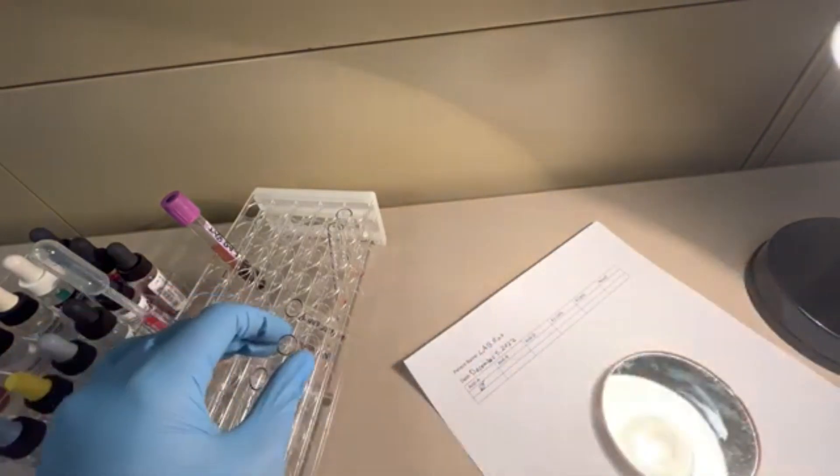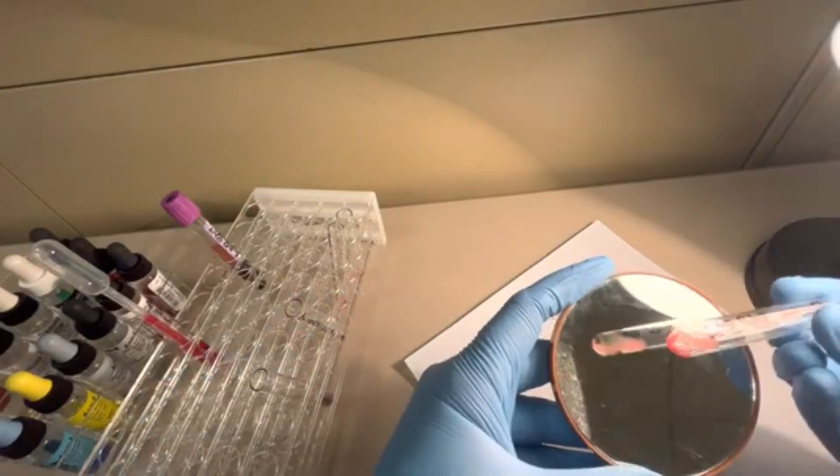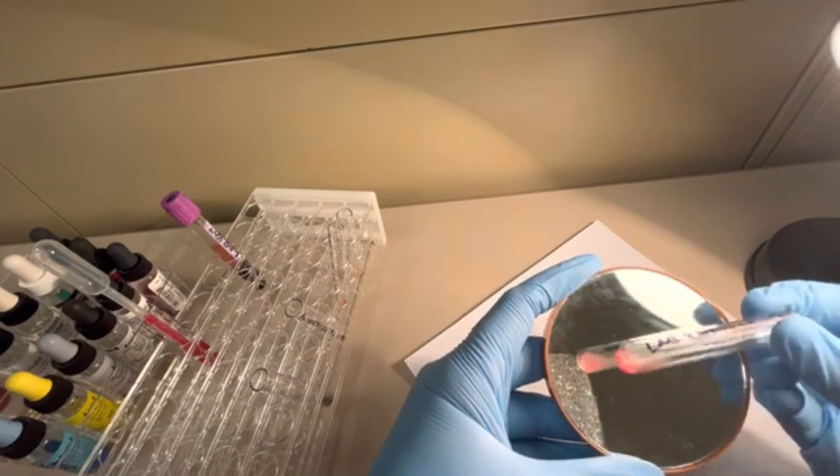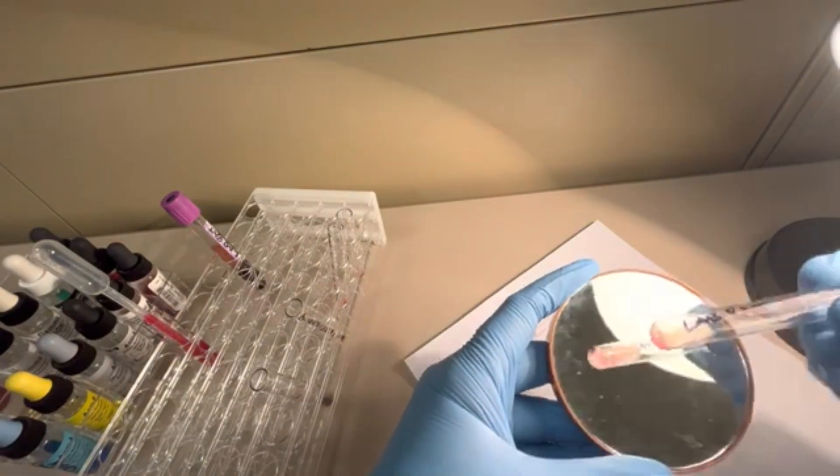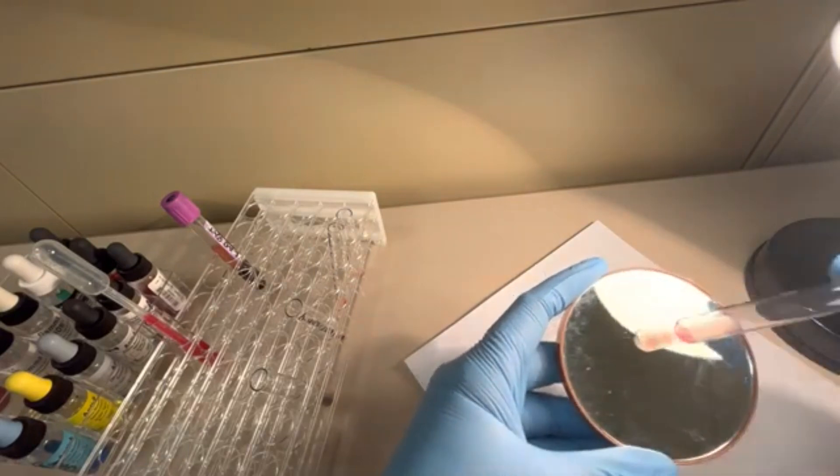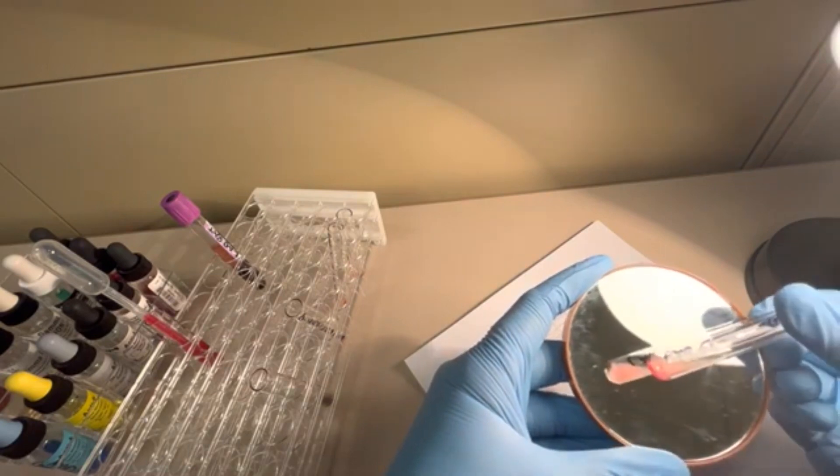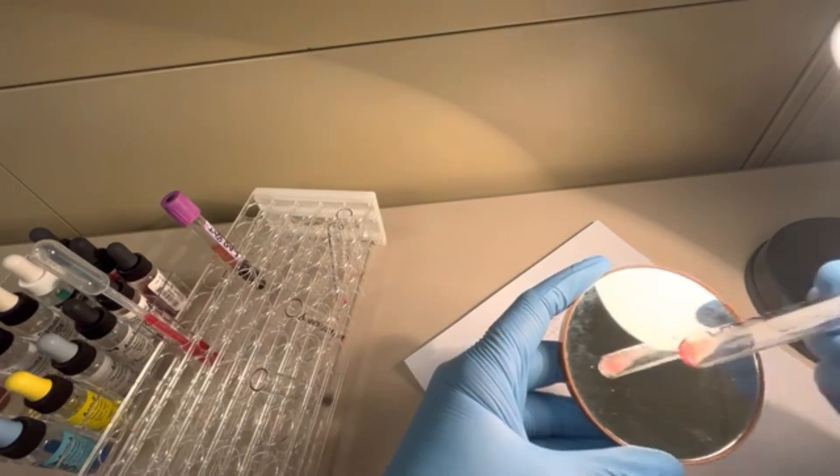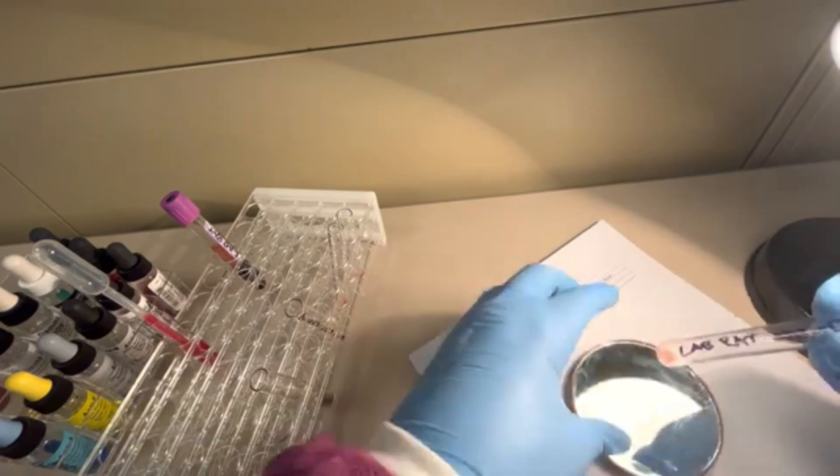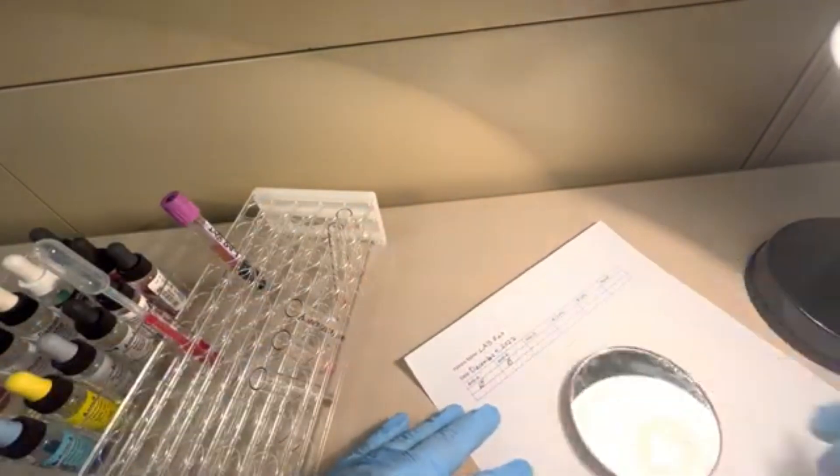Now we can move on to the next tube, anti-B. You can see that button, that red cell button came off. There's no agglutination whatsoever. This is a very distinct and clear negative result. We're going to write negative for this patient.